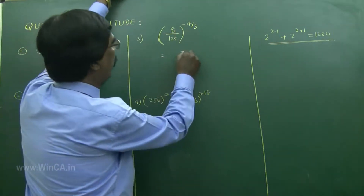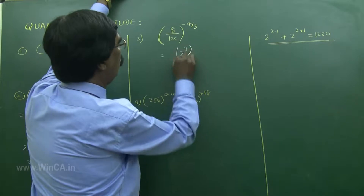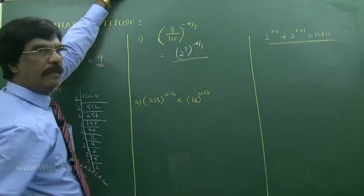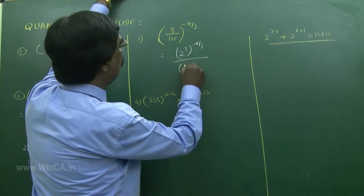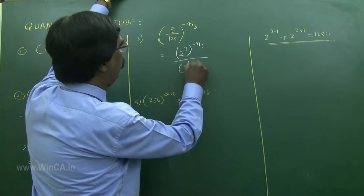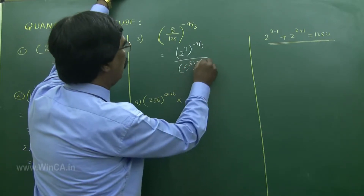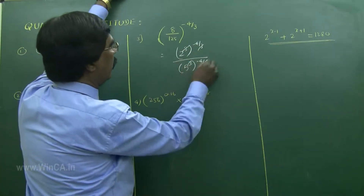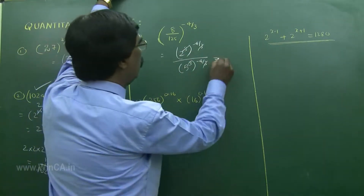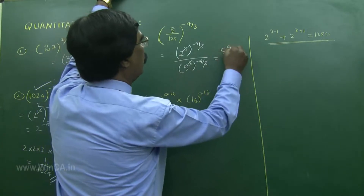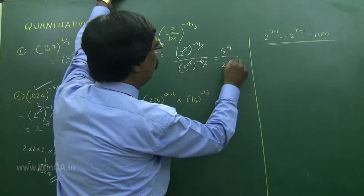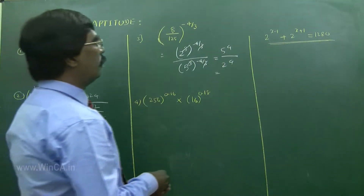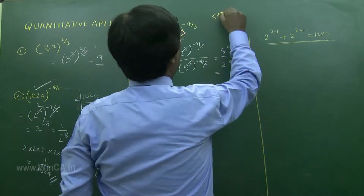Next: 8 by 5 cubed to the power of minus 4 by 3. Write this as 2 cube whole to the power of minus 4 by 3, over 5 cube whole to the power of minus 4 by 3. Cut these — bring 5 power 4 up and 2 power 4 down. What is 5 power 4? 5 into 5 is 25...